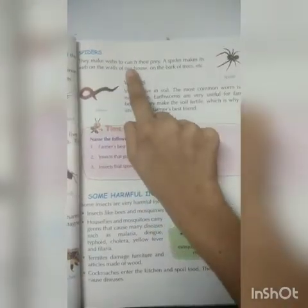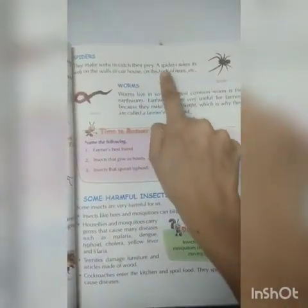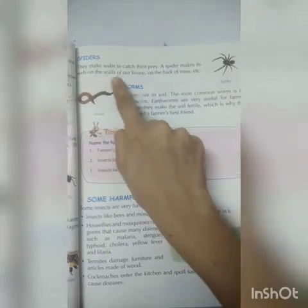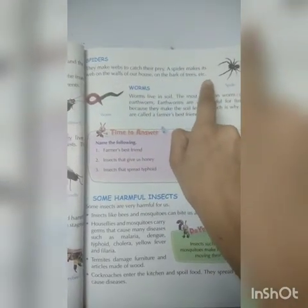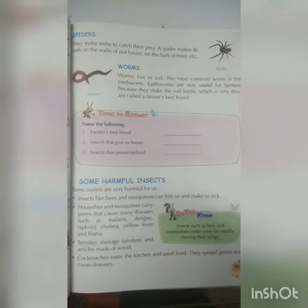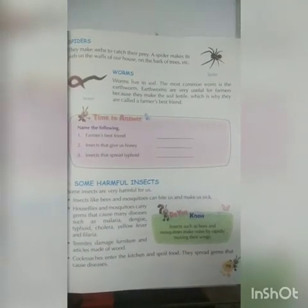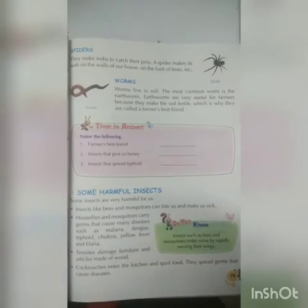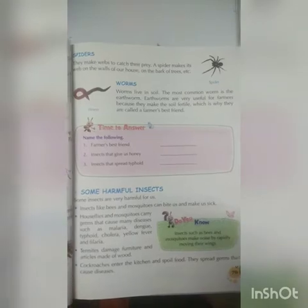Spiders make webs to catch their prey. A spider makes its web on walls, in houses, and on the bark of trees. You will see spiders in the corners of your house. Worms live in soil. The most common worm is the earthworm. Earthworms are very useful for farmers because they make the soil fertile, which is why they are called the farmer's best friend.